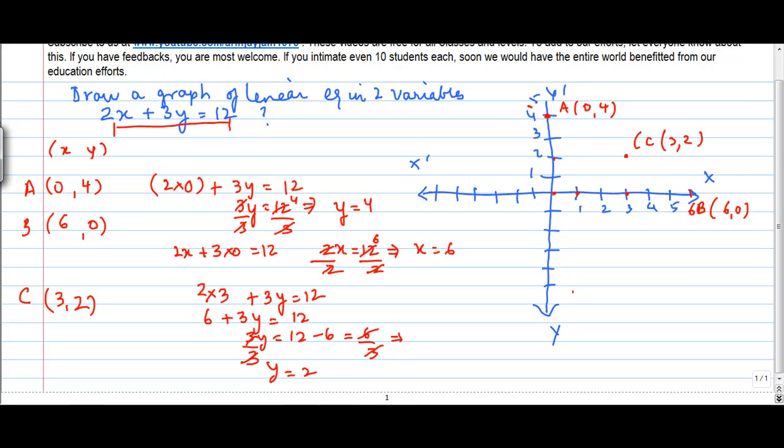Now when you connect all these three points, this has to be a straight line. This line is called 2x plus 3y is equal to 12.